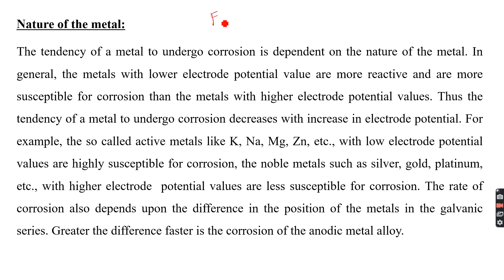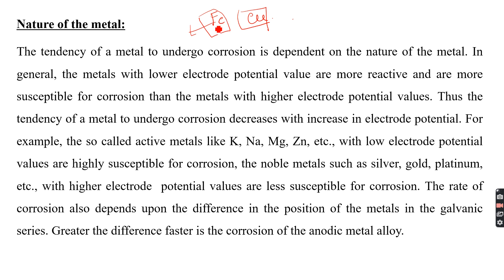For example, take two metals: iron and copper. If we keep both metals of the same size and composition in the open atmosphere for a long time, iron readily undergoes corrosion compared to copper, even though both are introduced to the same atmospheric temperature and pressure. This means the nature of the metal decides the rate of corrosion.